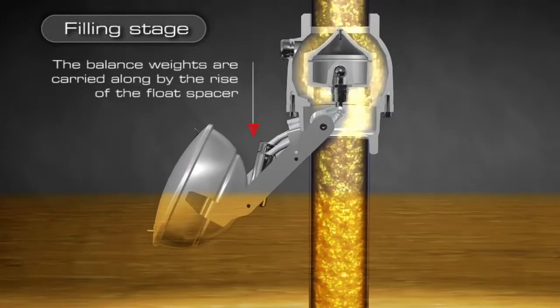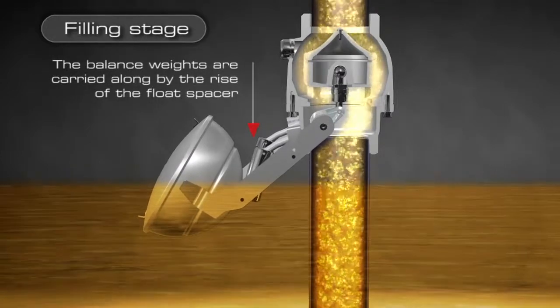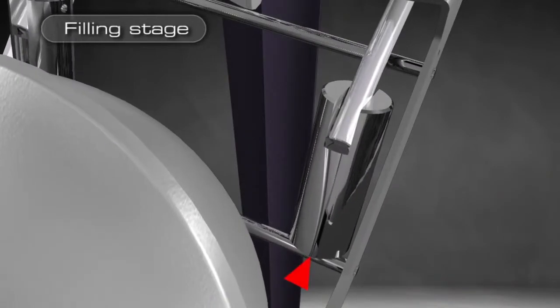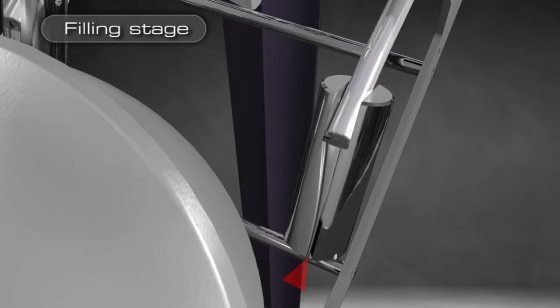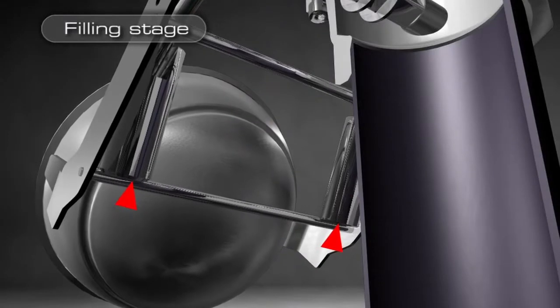This picture shows two balance weights indicated by a red arrow. During the filling stage, these balance weights are carried along by the rise of the float spacer.